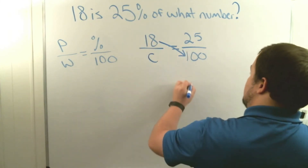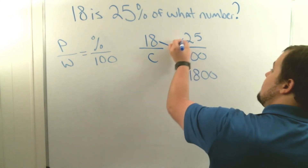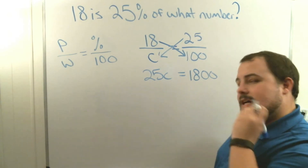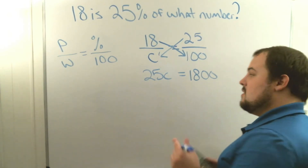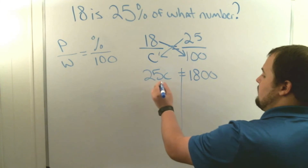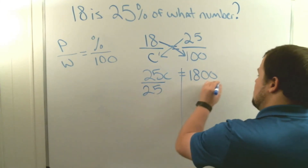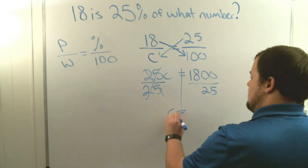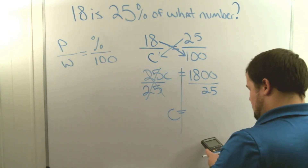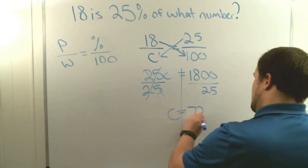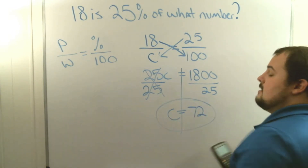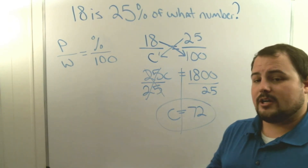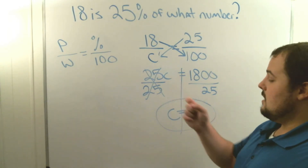We cross multiply: 18 times 100 is 1,800, and 25 times c is 25c. To solve for c, divide both sides by 25. This cancels out and we get c equals 1,800 divided by 25, which is 72. So if you had 18 out of 72 questions correct, you would have a 25 percent score — 18 out of 72 equals 25 out of 100.